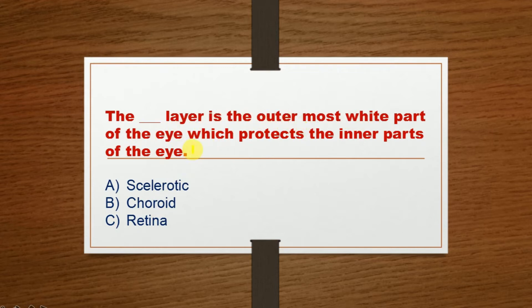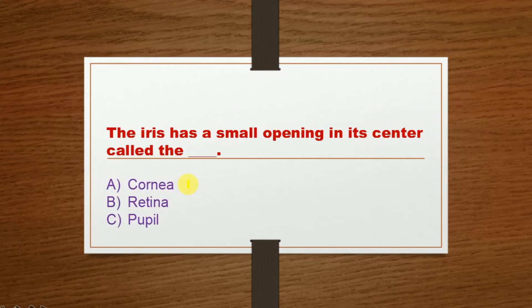Next question: The dash layer is the outermost white part of the eye which protects the inner part of the eye. Option A: Sclerotic layer, Option B: Choroid layer, Option C: Retina layer. The correct option is Option A: Sclerotic layer.